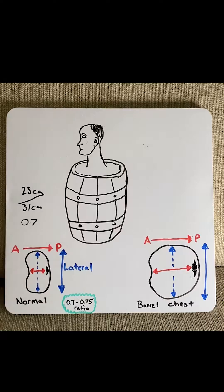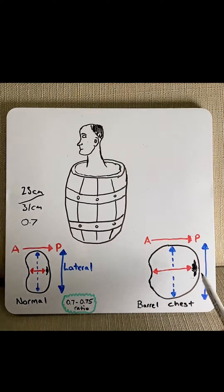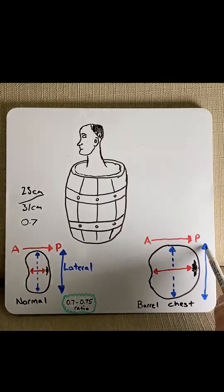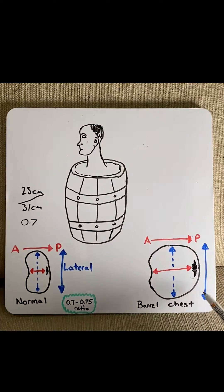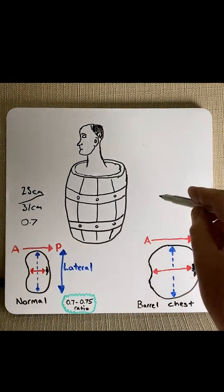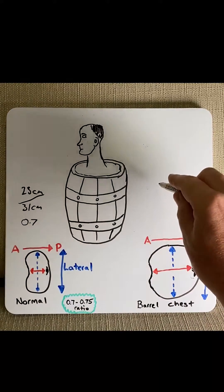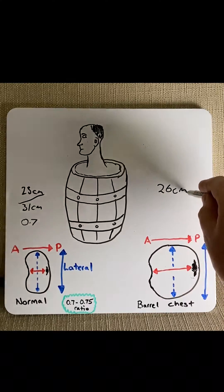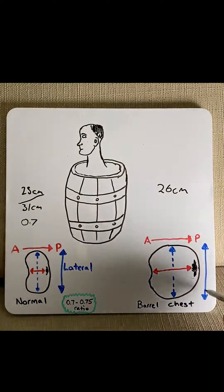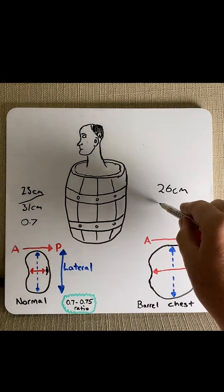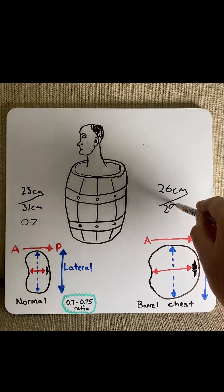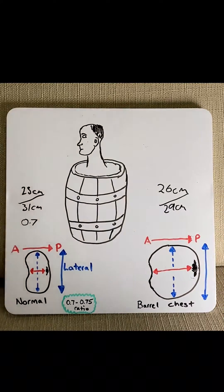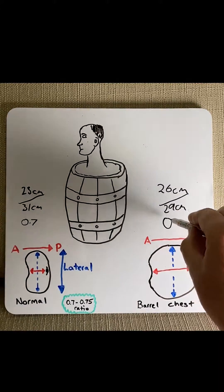In the phenomenon known as barrel chesting, the anterior posterior diameter approaches that of the lateral. For example, the anterior posterior is 26 cm whilst the lateral decreases to 29 cm. The ratio here is now 0.9.